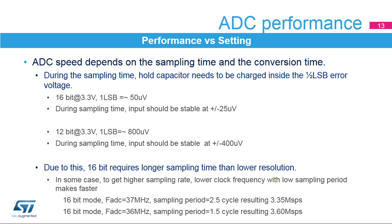The ADC speed depends on both the sampling time and the conversion time. During the sampling time, the hold capacitor must be charged to the proper LSB voltage with an error lower than half of the LSB voltage to ensure correct accuracy. The higher the resolution, the longer the sampling time. This is why it is sometimes more efficient to use a lower clock frequency with a low sampling period to get a higher sampling rate.